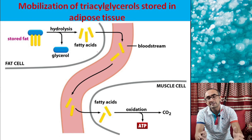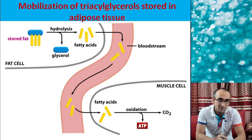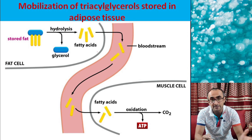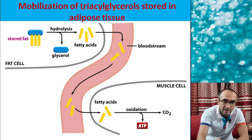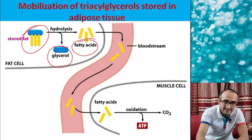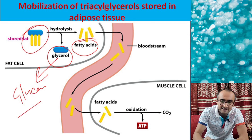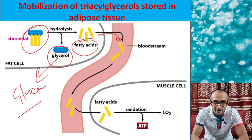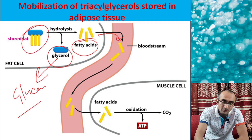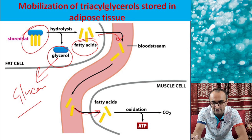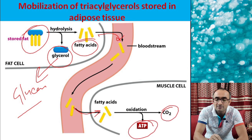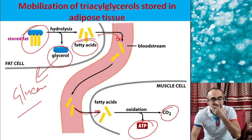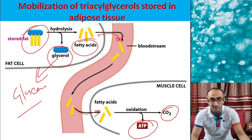The second source of lipids for cellular energy production is stored lipids in adipocytes. Stored triacylglycerols in adipose tissue are hydrolyzed into glycerol and fatty acids. The glycerol can be used for glucose synthesis via gluconeogenesis, while the fatty acids are released into the blood, transported to cells with energy requirements, absorbed via fatty acid transporters, and oxidized via beta oxidation to produce ATP — particularly when glucose is not available.